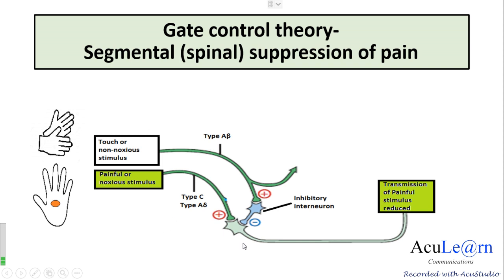Upon entering the spinal cord, they give a collateral which enhances the inhibitory interneuron activity. When the inhibitory interneuron is activated, they release the endogenous opioids which close the gate for the transmission of pain signals to the somatosensory cortex.